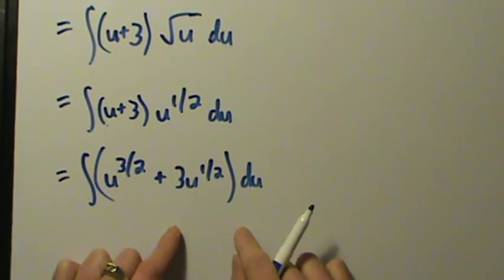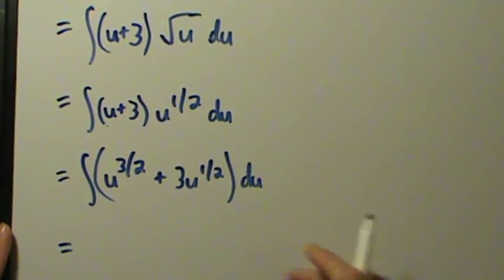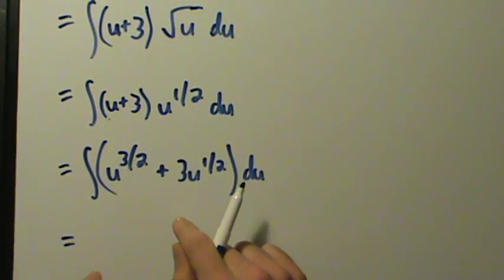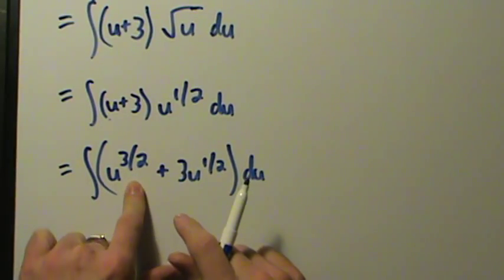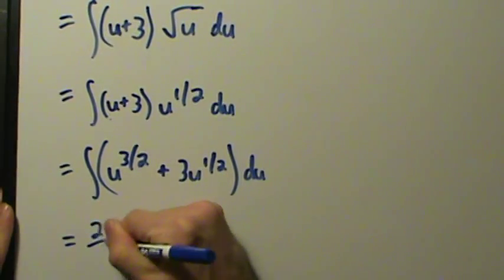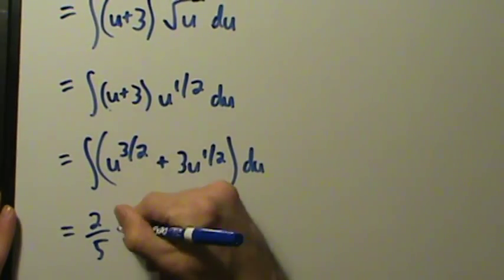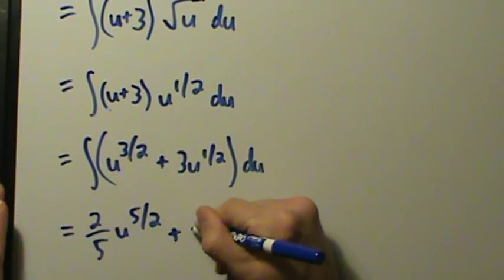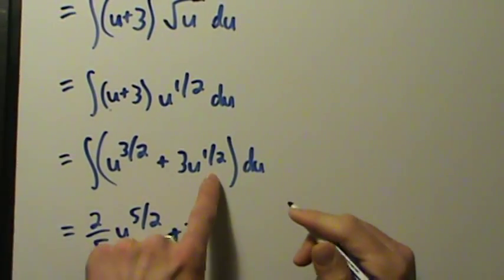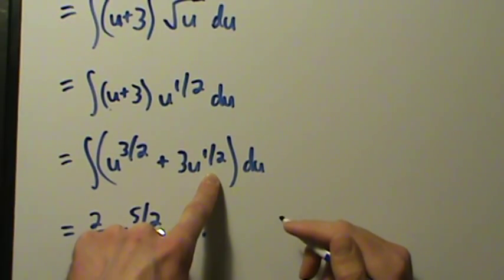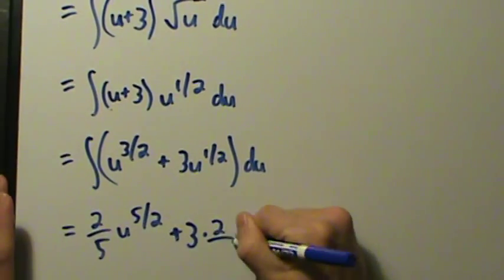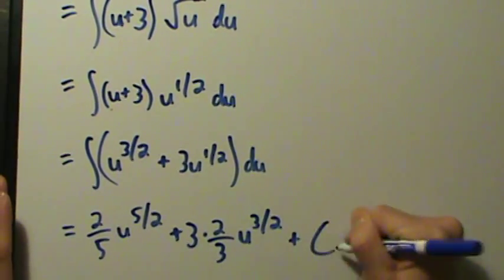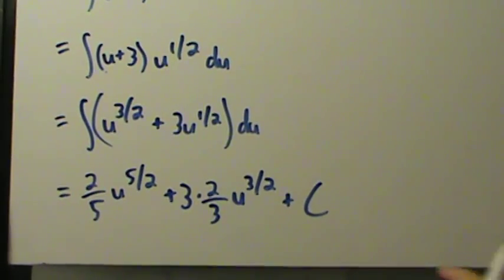This is pretty much just a straight-up power rule now — power rule for integrals. If we integrate that, remember: add 1 to the exponent and then divide by that. So 3/2 plus 1 gives 5/2, and dividing by that gives 2/5. So we get 2/5 times u to the 5/2. Then we still have the 3, and 1/2 plus 1 gives 3/2; dividing by 3/2 gives 2/3. So we get 3 times 2/3 times u to the 3/2, plus C, because it's indefinite.